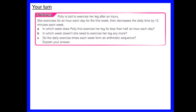For the challenge question: Polly is told to exercise her leg after an injury. She exercises for an hour each day for the first week, then decreases the daily time by 12 minutes each week. We want to know: in which week does she first exercise for less than half an hour? In which week does she stop entirely? Do the daily exercise times form an arithmetic sequence?